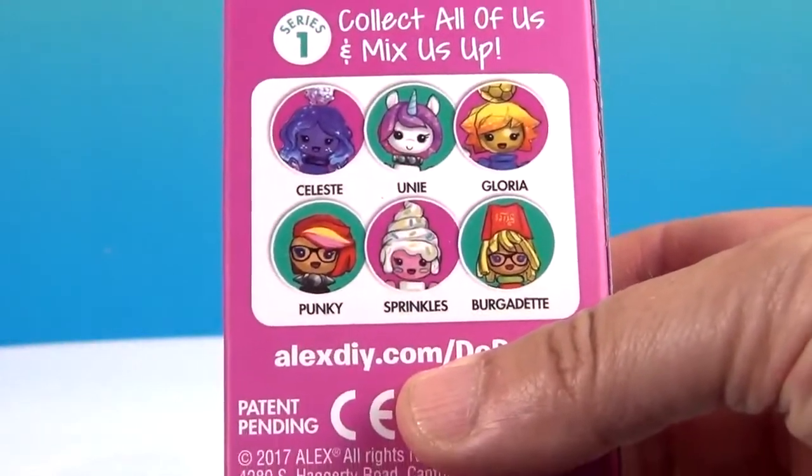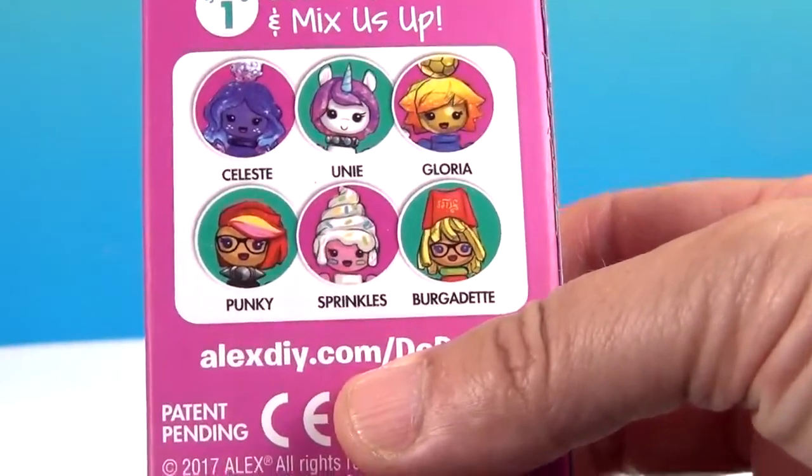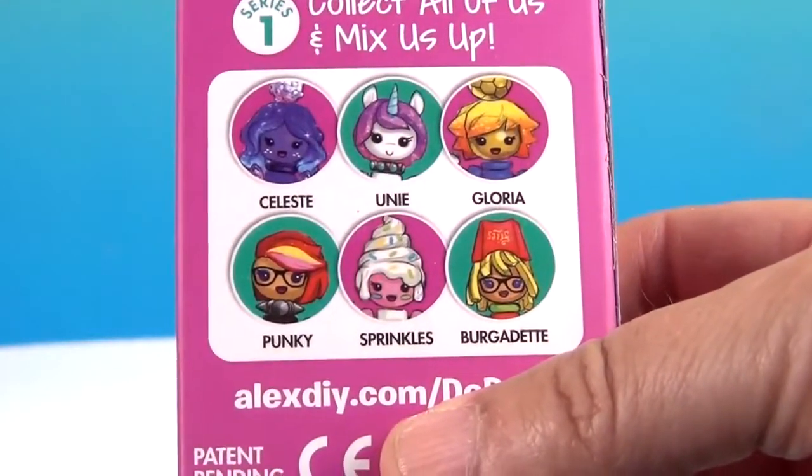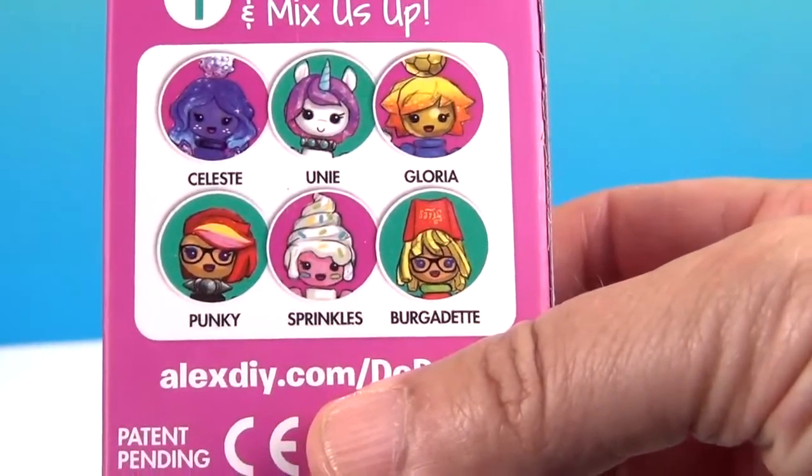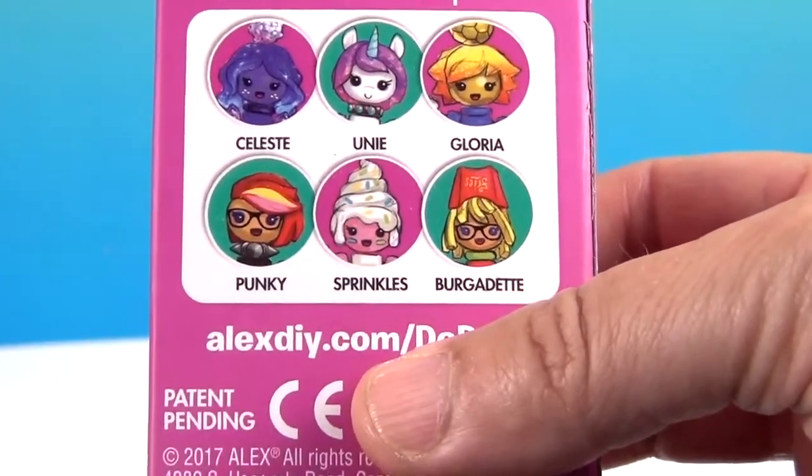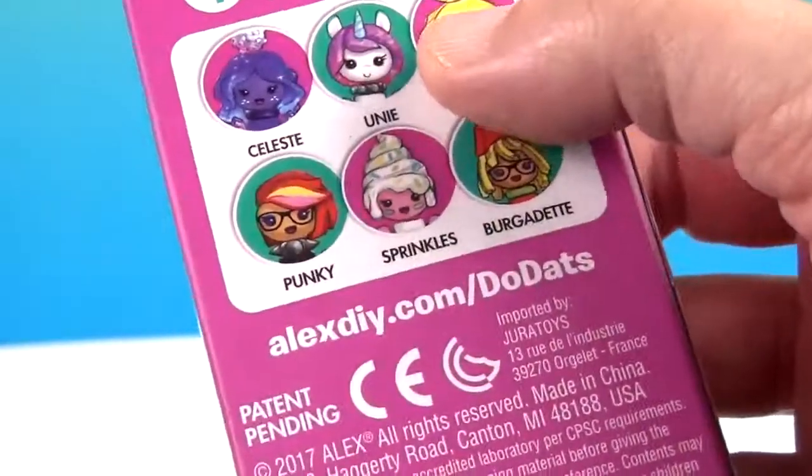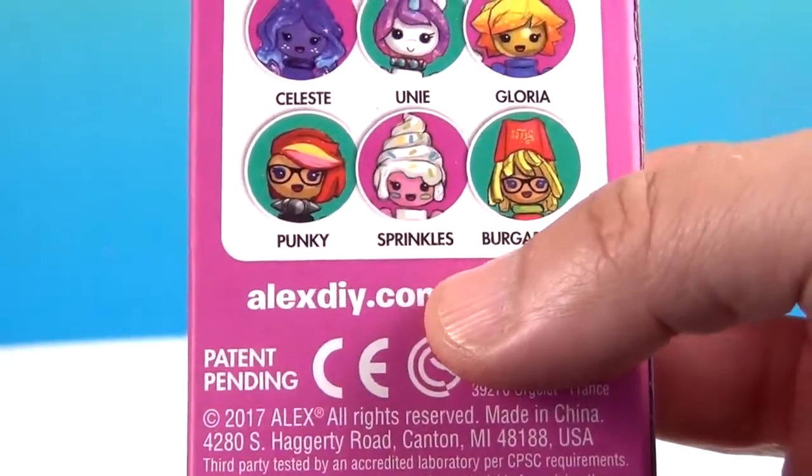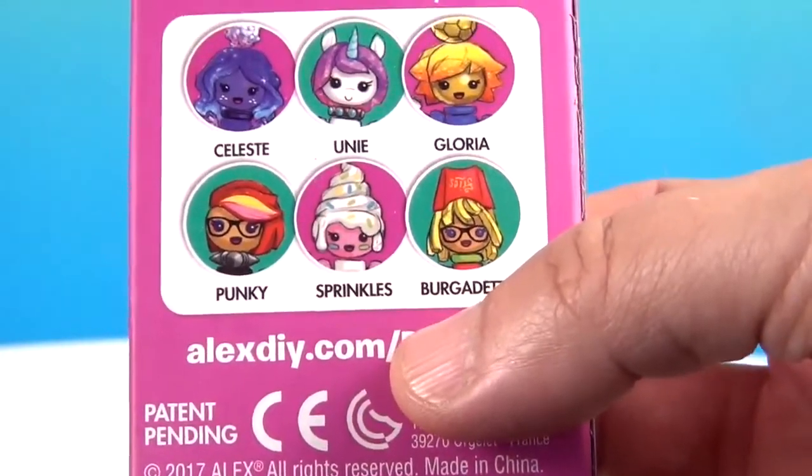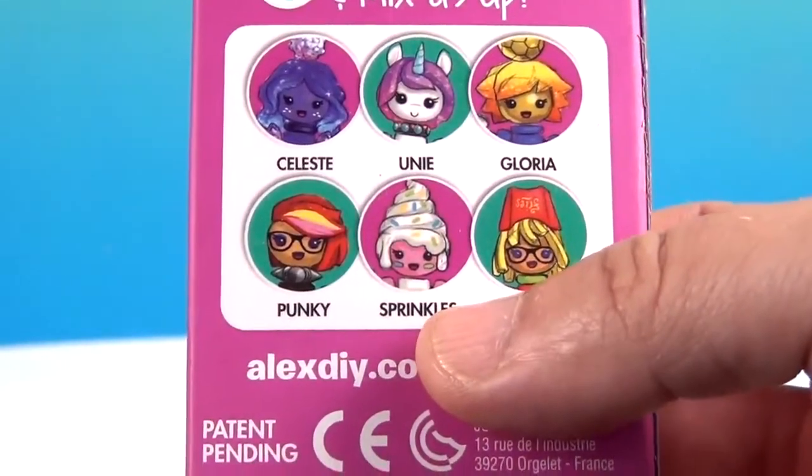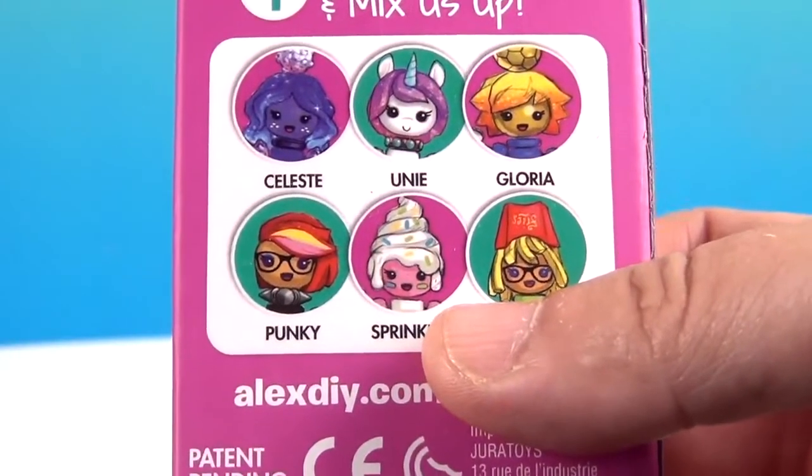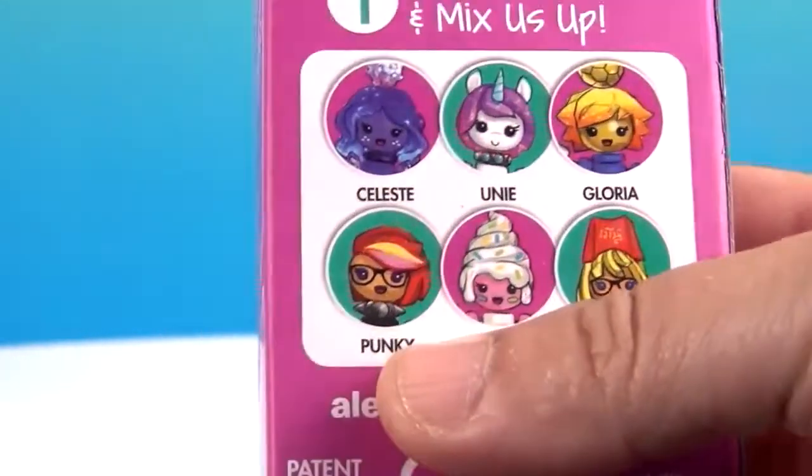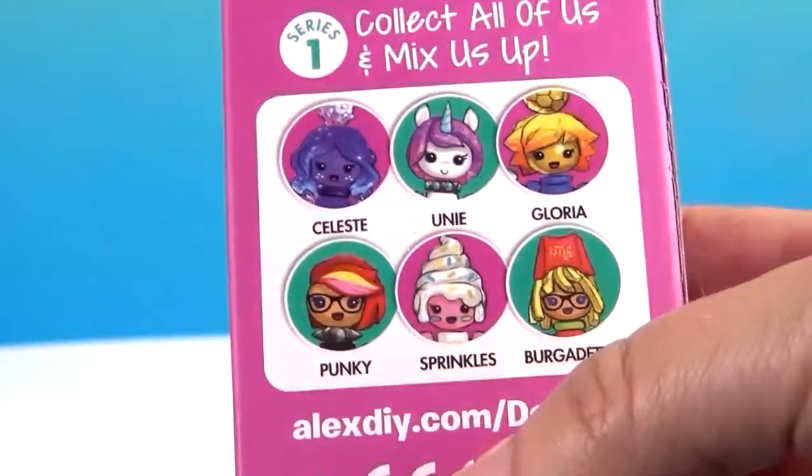So we have also it looks like, is that Celeste? Celeste, Uni, Gloria. Oh is she like a soccer player it looks like? Possibly. She looks like she's got a soccer ball on her head. We have Punky, Sprinkles and Burgadette. Oh my goodness. Oh I definitely would like to get Burgadette and Uni. But all of them look really awesome. I like Celeste's colors as well.